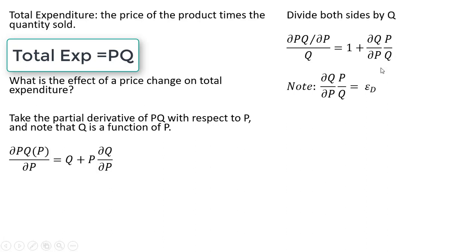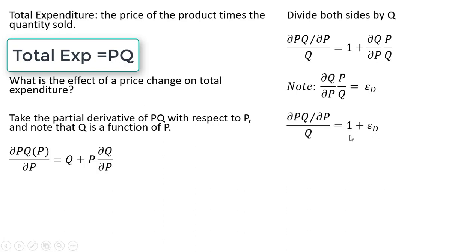The last result on the right-hand side is just the price elasticity of demand. So this is our formula for the price elasticity of demand. We'll make a substitution into the above result, and now we can show the effect of the price elasticity of demand on total expenditure.